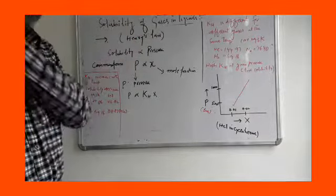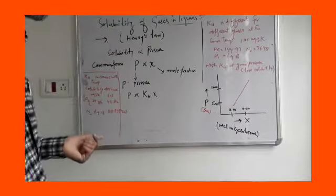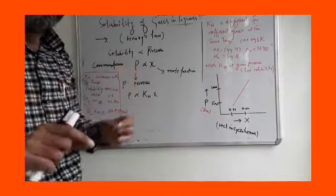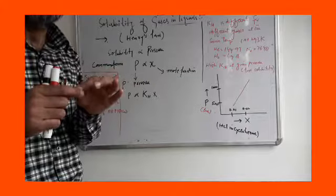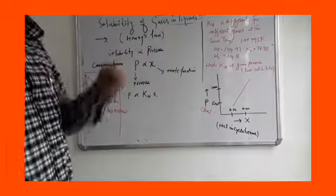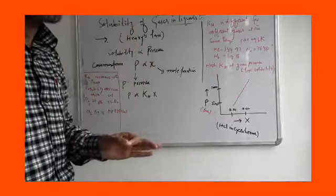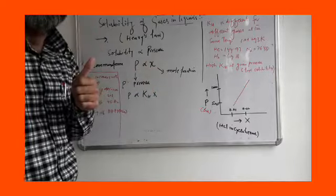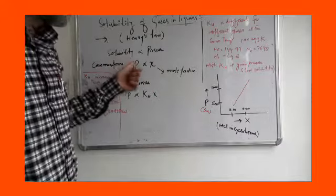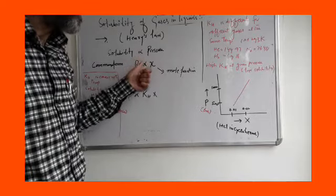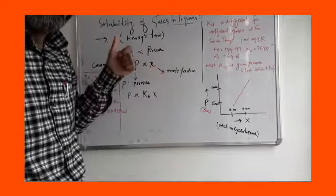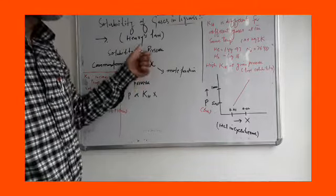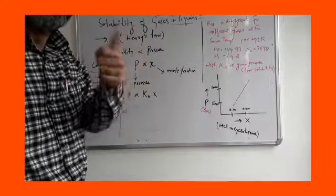The most common form of Henry's law, which is mostly used, states that the partial pressure of the gas in the vapor phase is directly proportional to its mole fraction in the solution. That means P varies directly with mole fraction X, where P is the partial pressure of the gas in the vapor phase and X is the mole fraction of the gas in the solution.